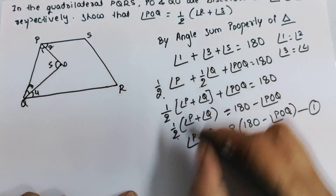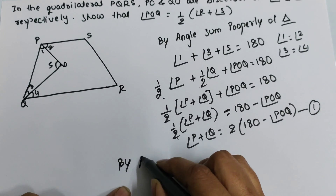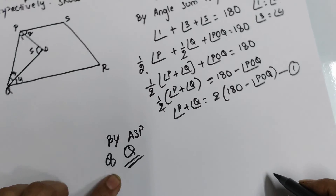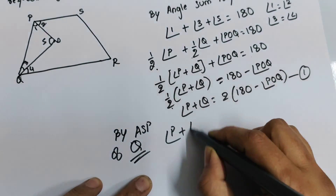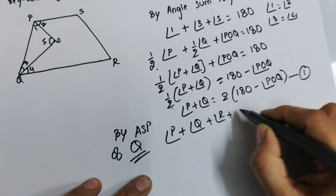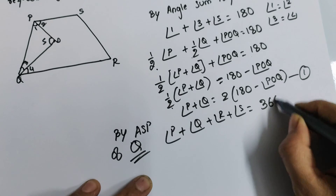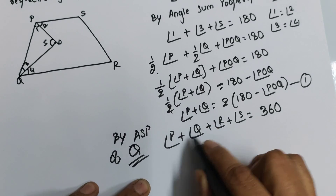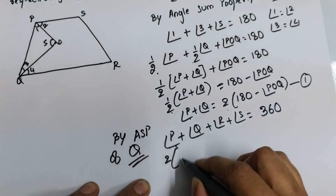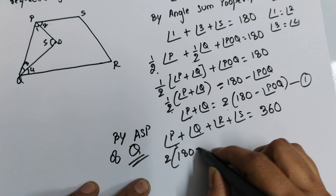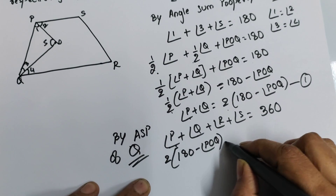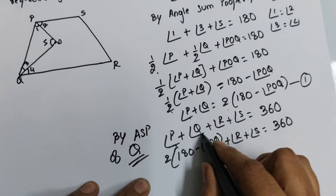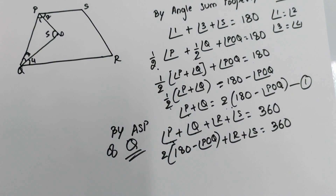Now by the angle sum property of a quadrilateral PQRS, angle P plus angle Q plus angle R plus angle S equals 360 degrees, since any four-sided figure has angles summing to 360 degrees. Using equation one, we replace angle P plus angle Q with two times the quantity 180 minus angle POQ, giving us: two times (180 minus angle POQ) plus angle R plus angle S equals 360.